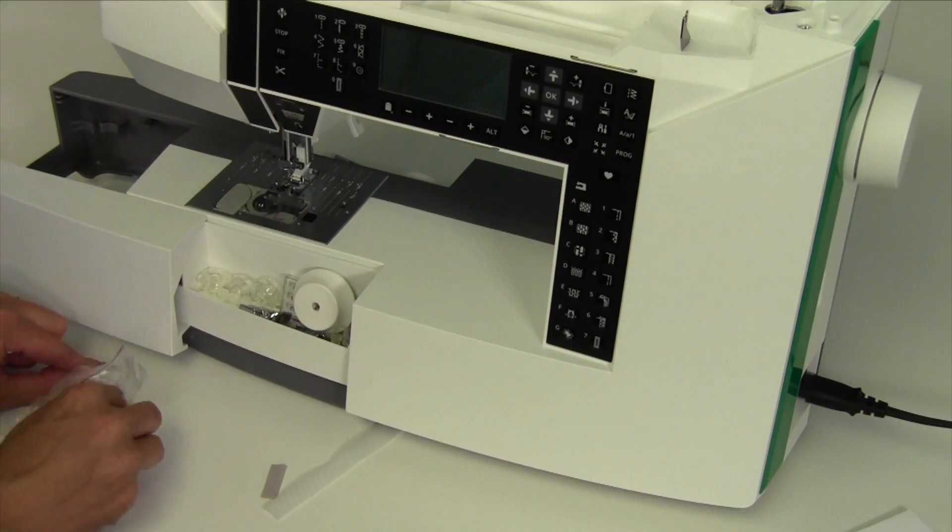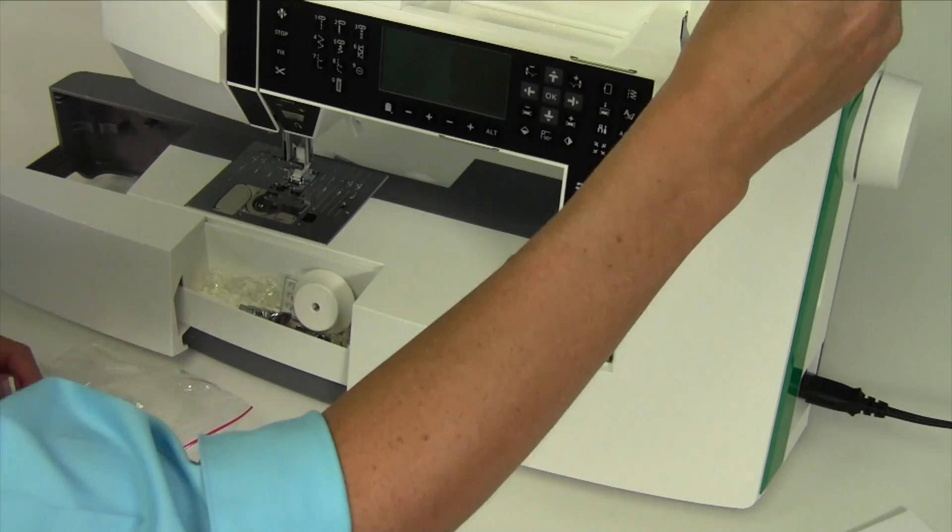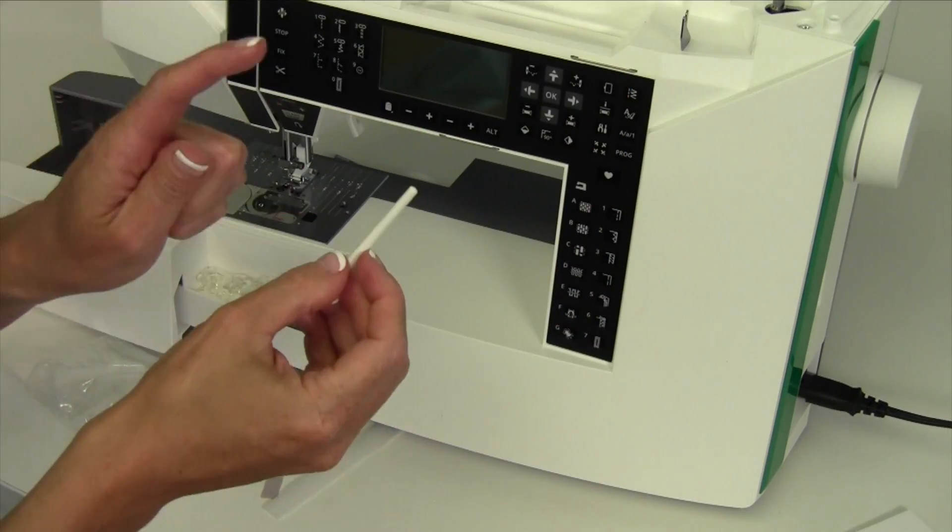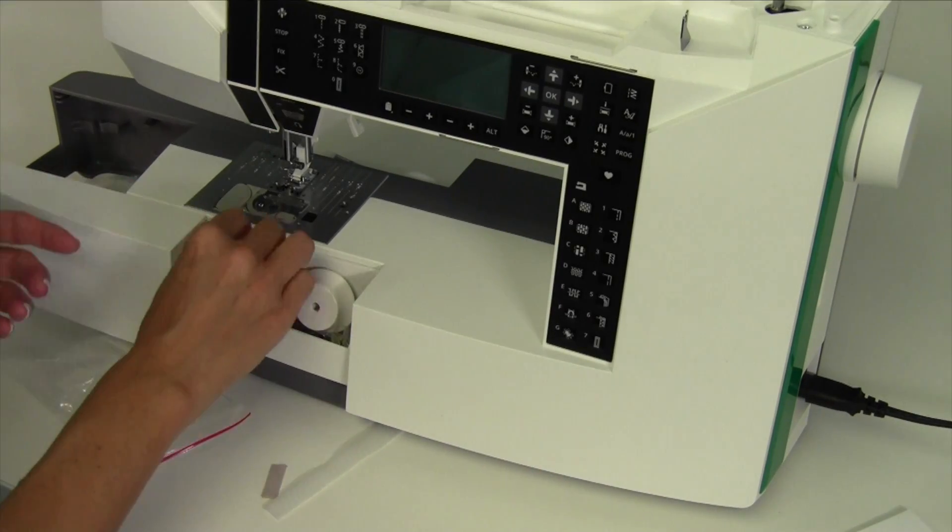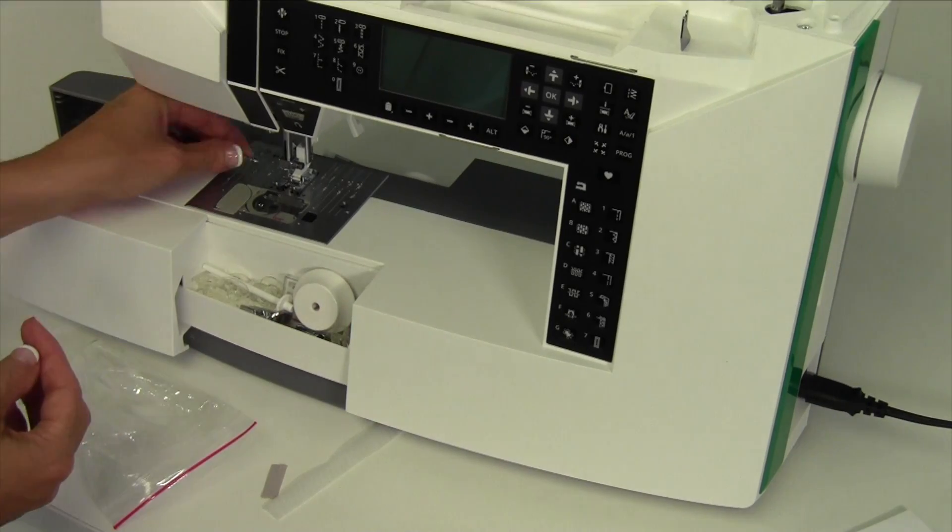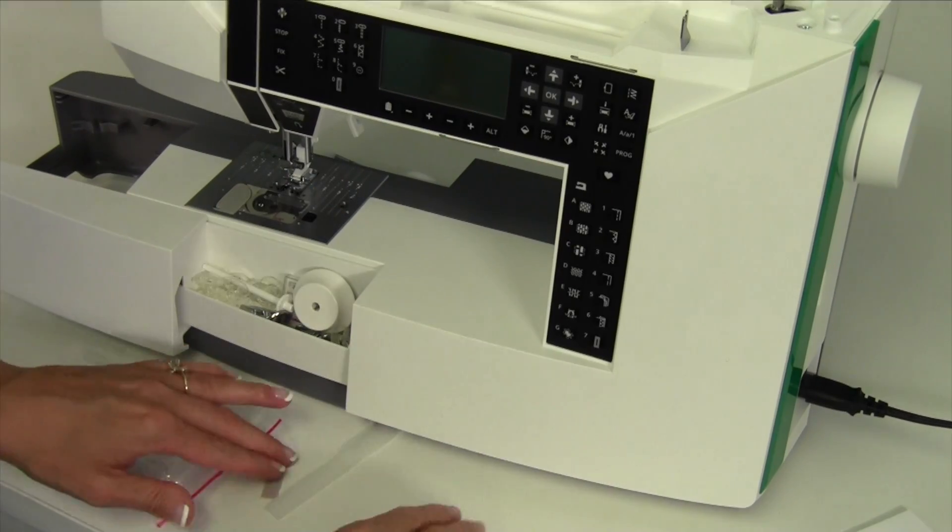We do have another vertical spool pin that can be placed right up here on one of those openings. It's actually right here. And then if you're using two spools like for a twin needle that's where your second spool can actually go. And we have an extra screw. I'll need to double check what that one's for. It could be for the embroidery foot. But don't quote me on that. But there's an extra screw in here for some reason.